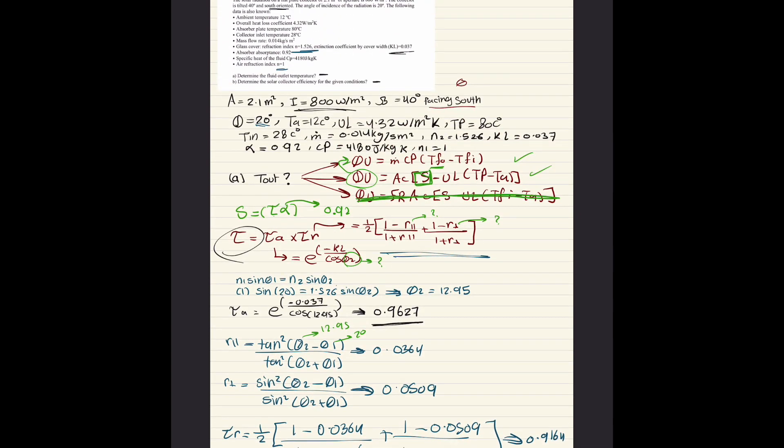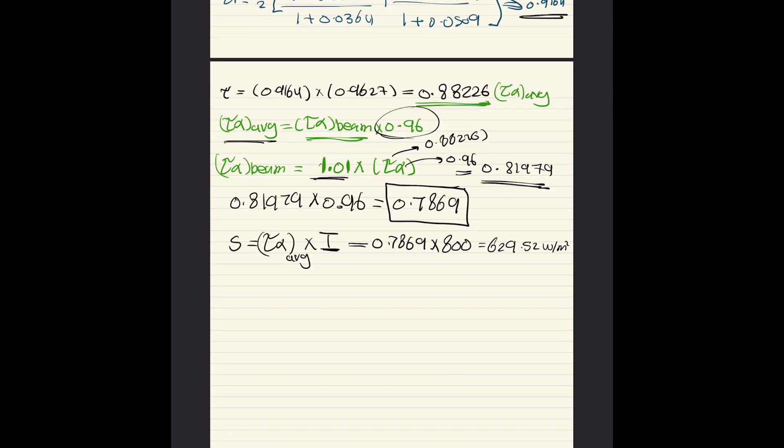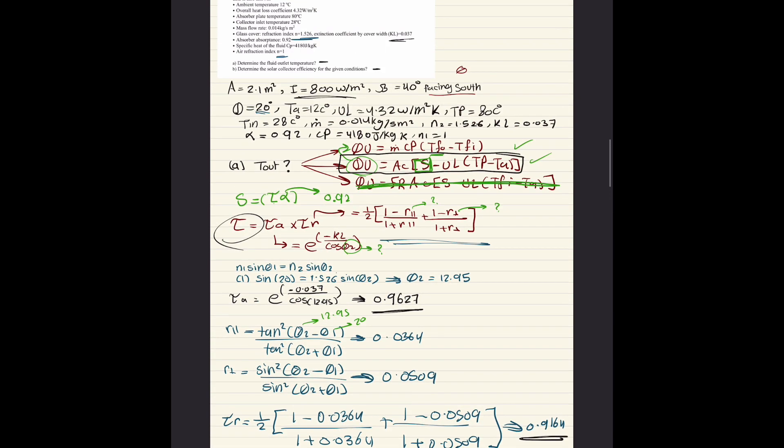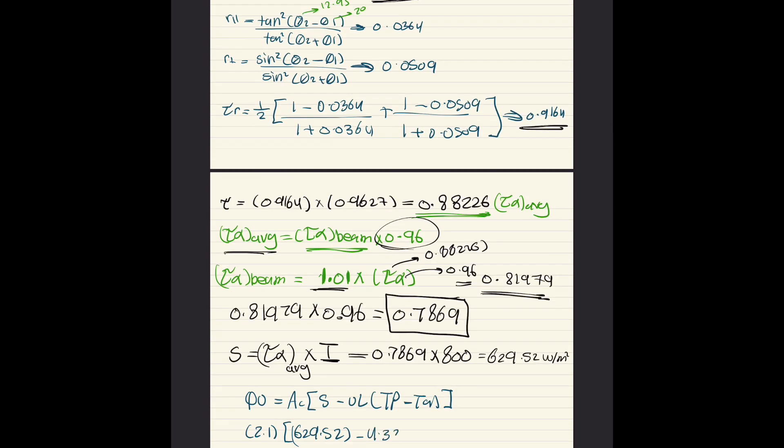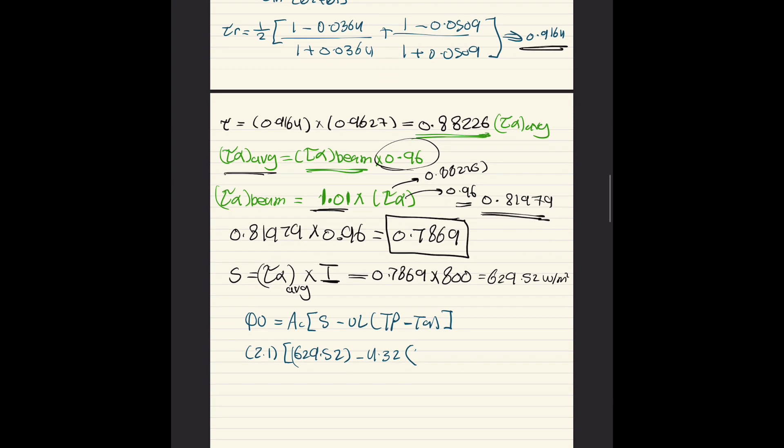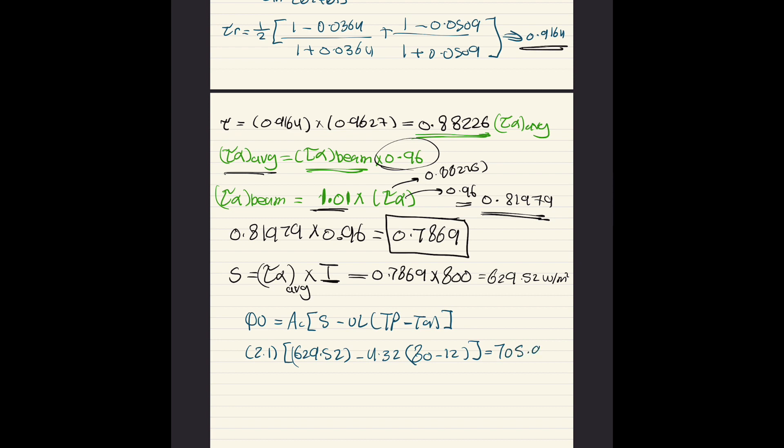Now substituting everything in, this is going to give us QU. QU equals AC times S minus UL times T plate minus T ambient. AC is given as 2.1, S is 629.52, minus UL is given as 4.32, T plate is 80, T ambient is 12. Substitution gives 705.96 watts.